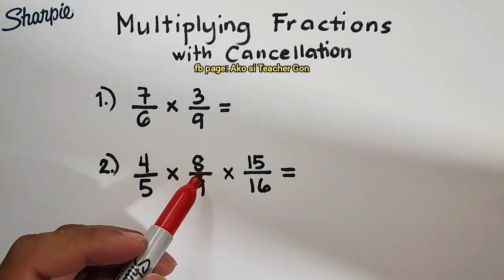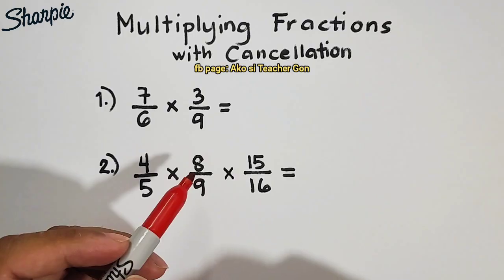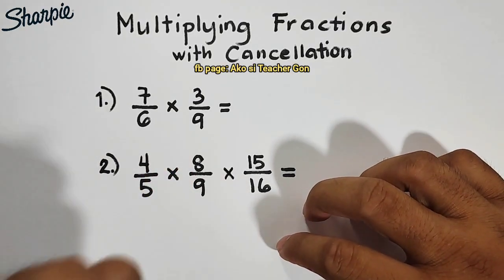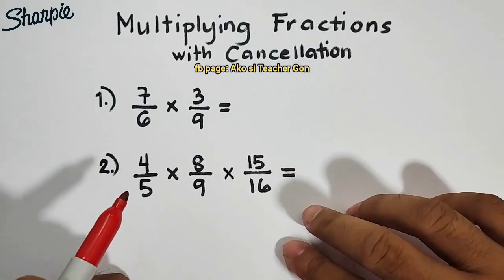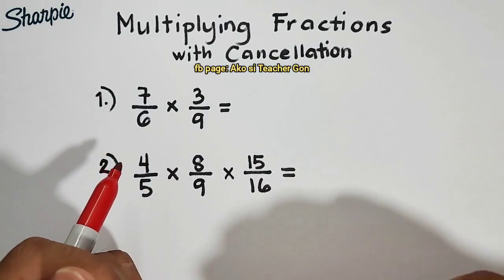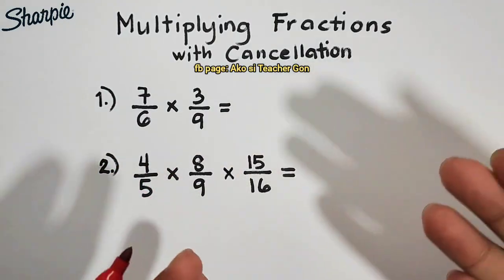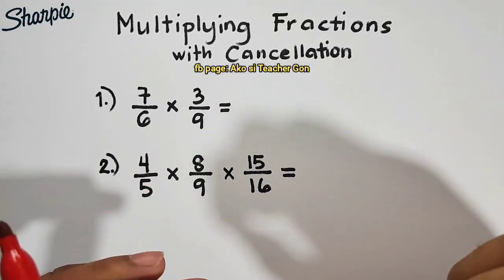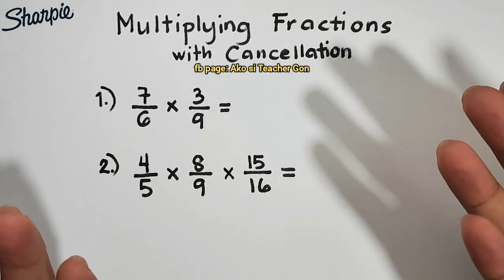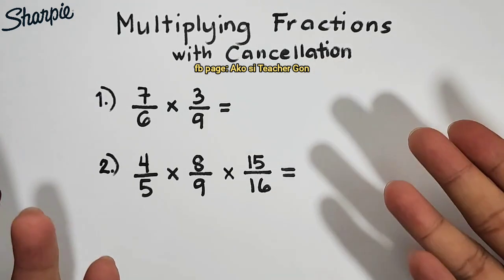So, what is the purpose of cancellation method? The purpose of cancellation method is that we cancel so that we don't make our numbers bigger. Because it is difficult for us to simplify a fraction if the numbers are quite big.